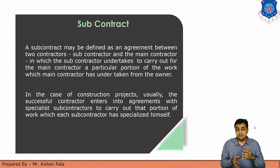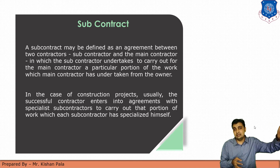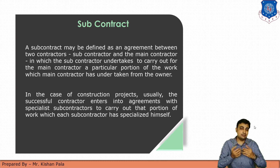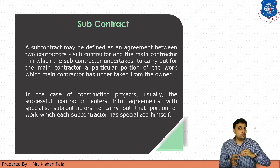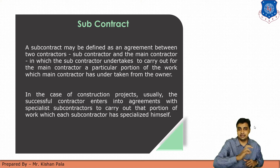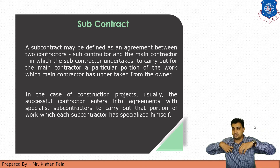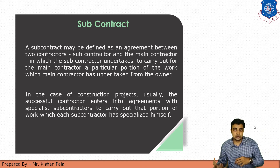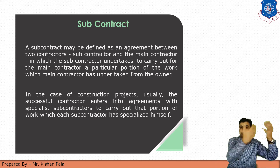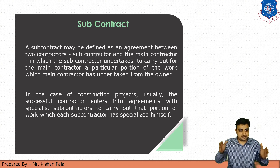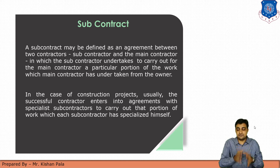Regarding the financial flow: the client gives total payment to the main contractor, who then distributes payments to subcontractors — the labor contractor, materials contractor, third-party inspectors, and other agencies. The flow goes from client to main contractor, and from main contractor to subcontractor. The subcontractor reports to the main contractor, and the main contractor reports to the client. After this session, you can understand contract types in this alternative classification. Thank you.